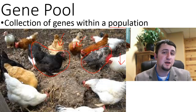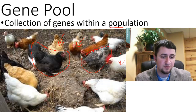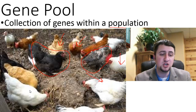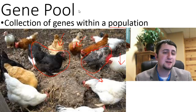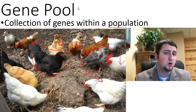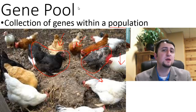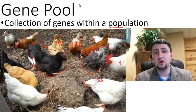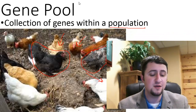The gene pool is capable of evolving. This individual chicken cannot evolve. However, all of the chickens together are capable of evolving as a whole. Anytime there is a change in the gene pool, that is what we call evolution. And that can occur in five different ways.